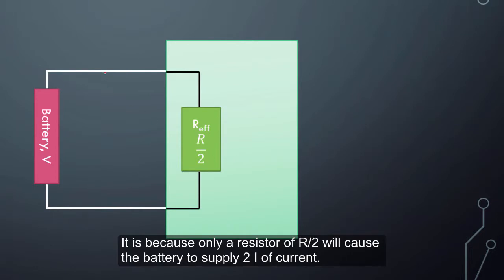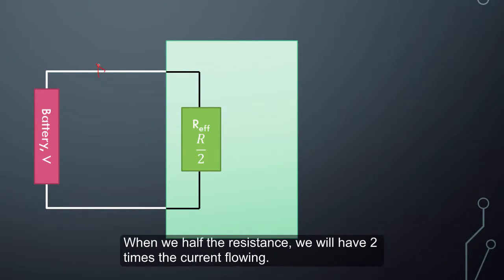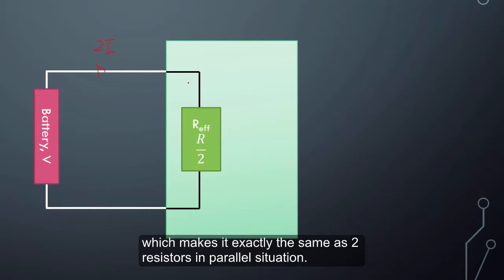We replace this by R over 2, because only R over 2 would cause the battery, when you halve the resistor, the current will be 2. So it's exactly as the 2 resistors in parallel situation.